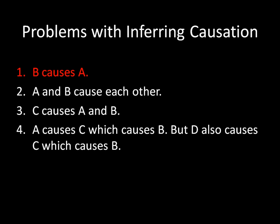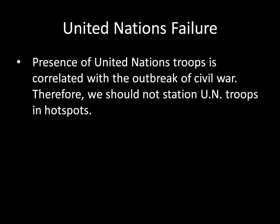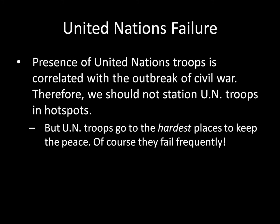First, let's talk about how B could cause A. Something that really frustrates me is when people talk about the United Nations and the failure of UN troops to promote peace. People might tell you that the presence of United Nations troops is correlated with the outbreak of civil war, and therefore we should not station UN troops in hotspots because they're bad at stopping civil wars. But that's not what's happening. What's causing UN troops to get involved is that these places are so prone to conflict — the UN troops are going to the hardest places to keep the peace. Of course they're failing frequently; it's not easy to promote peace in the hardest places to promote peace. So you see a correlation between UN troops and breakdown of peace, but it's not the troops causing the breakdown — it's the breakdown of peace causing the troops to show up.